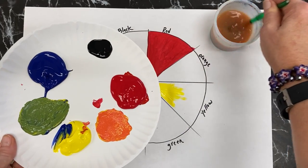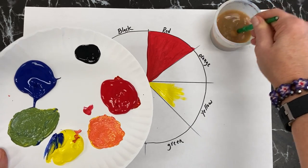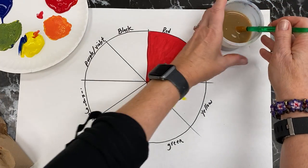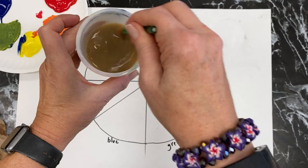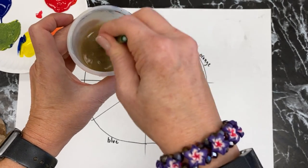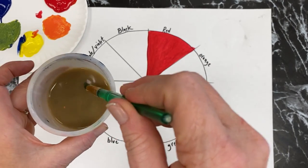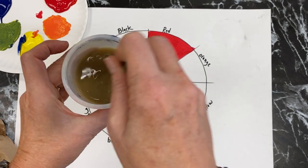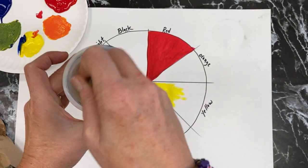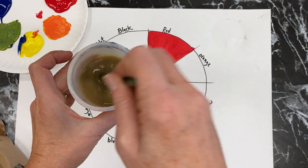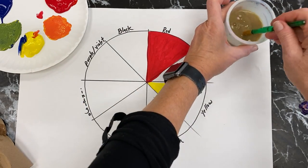So right now my water is getting kind of murky and muddy, so I might want to go to my closest sink and change out my water because clean water will help your color stay a little more true and a little more accurate.